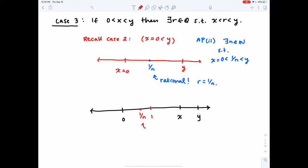And the issue is, it's rational, but it's not between x and y. So it's not as simple as just applying the Archimedean property here. We have to do something else.